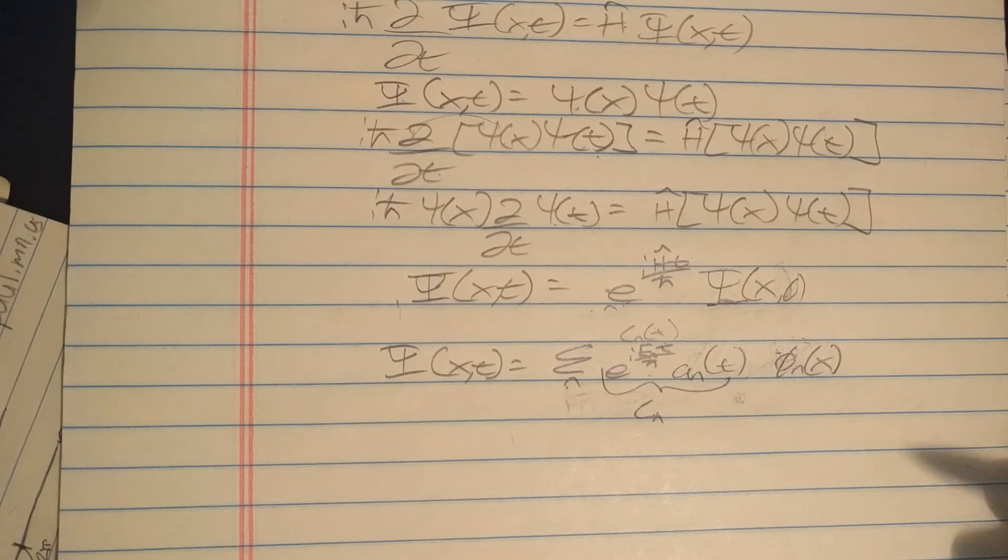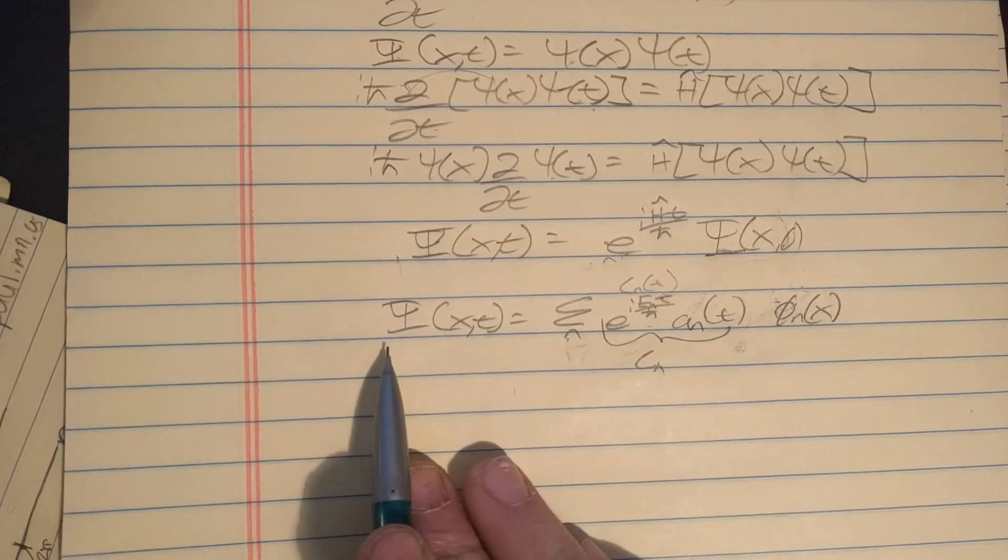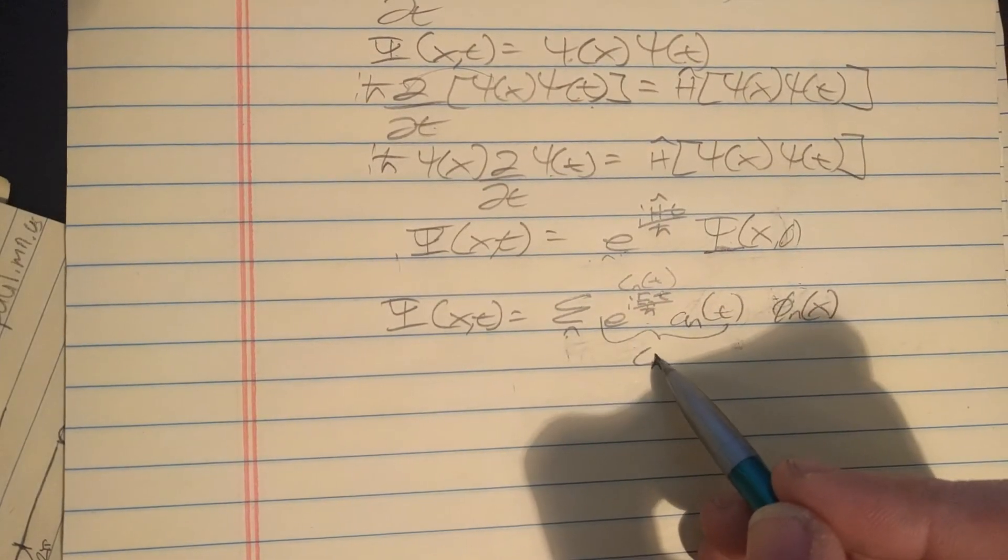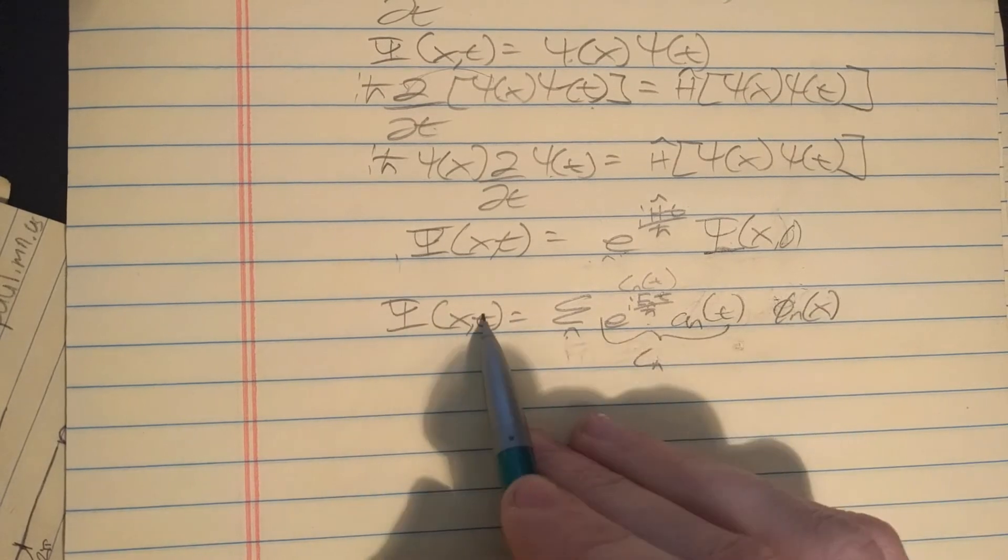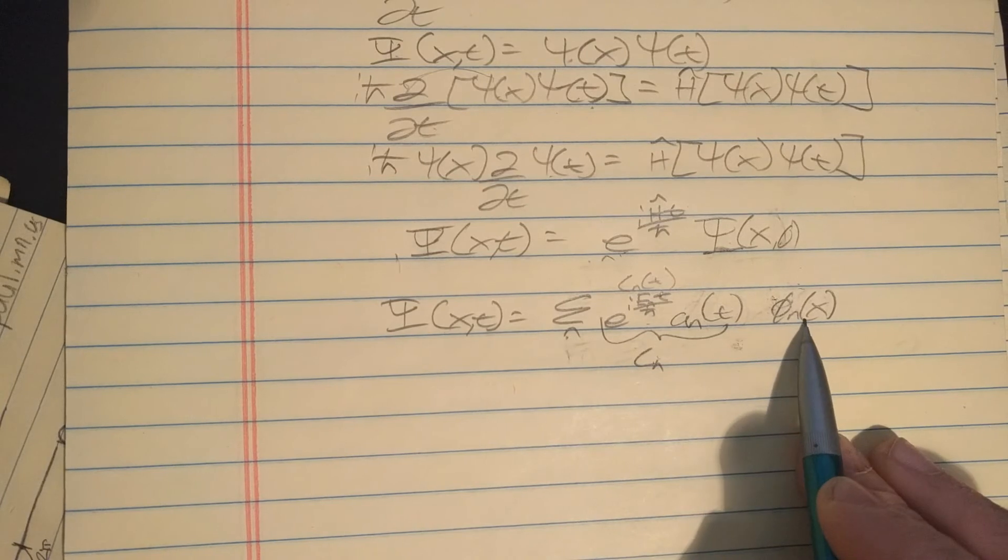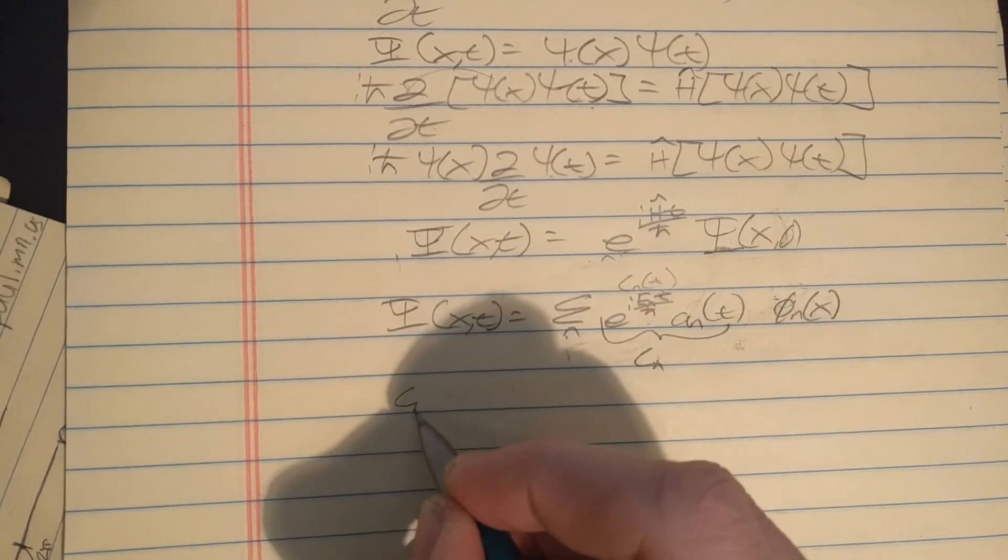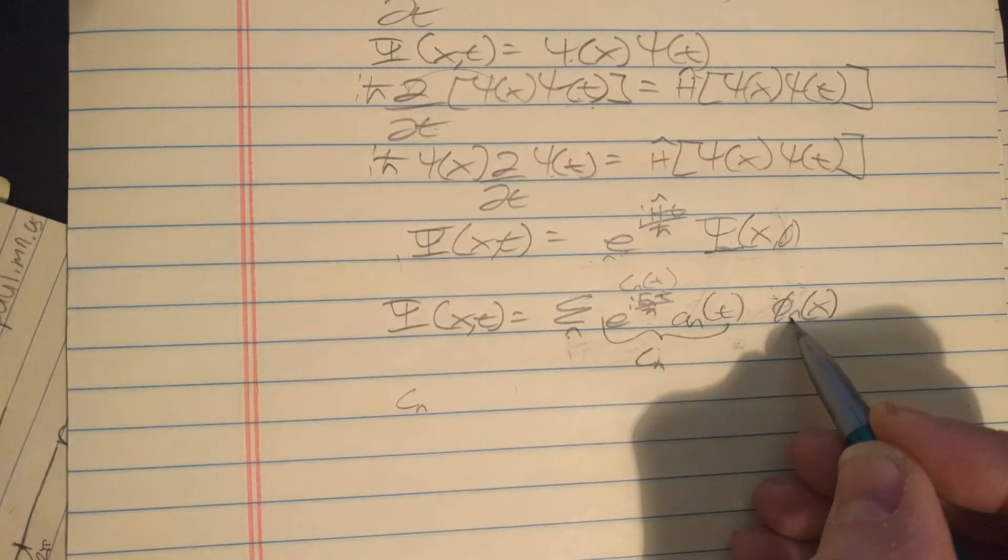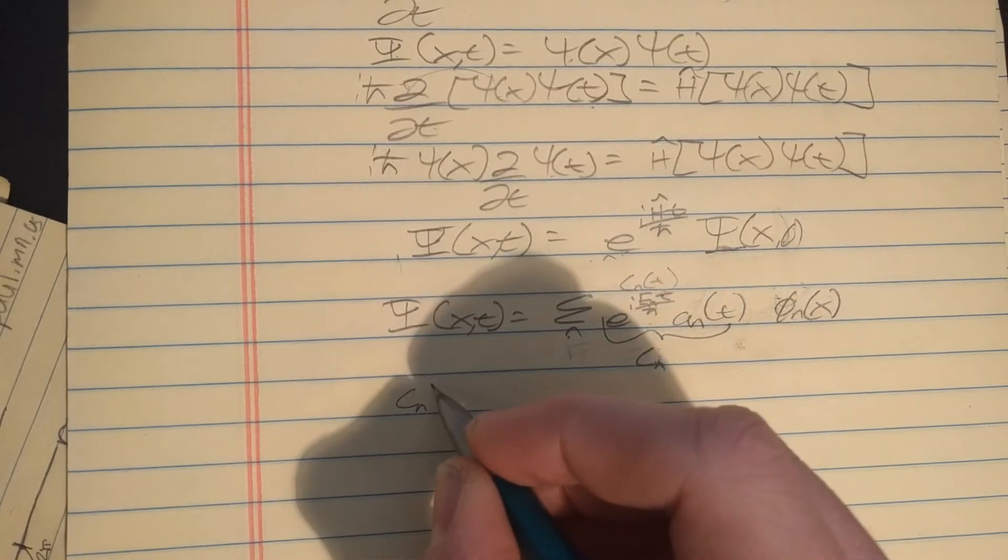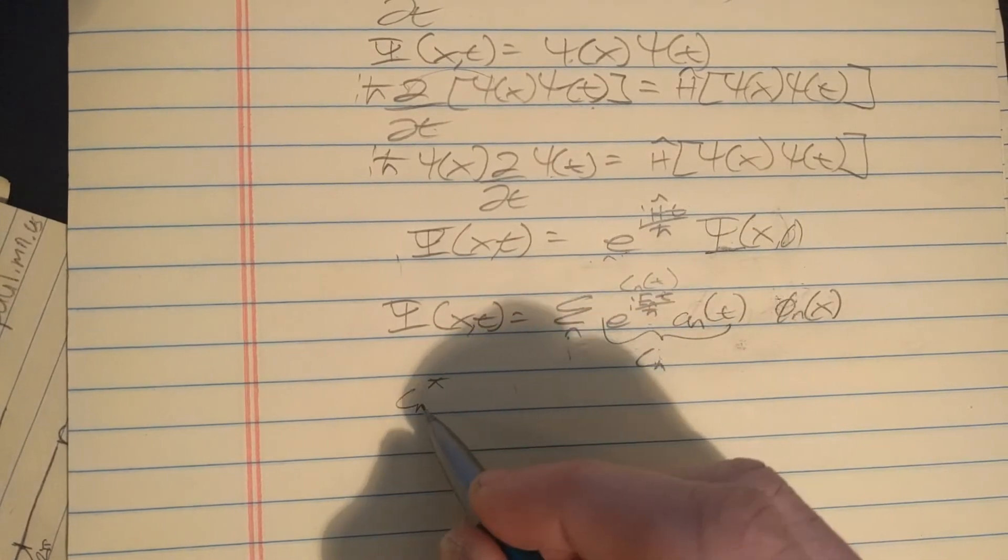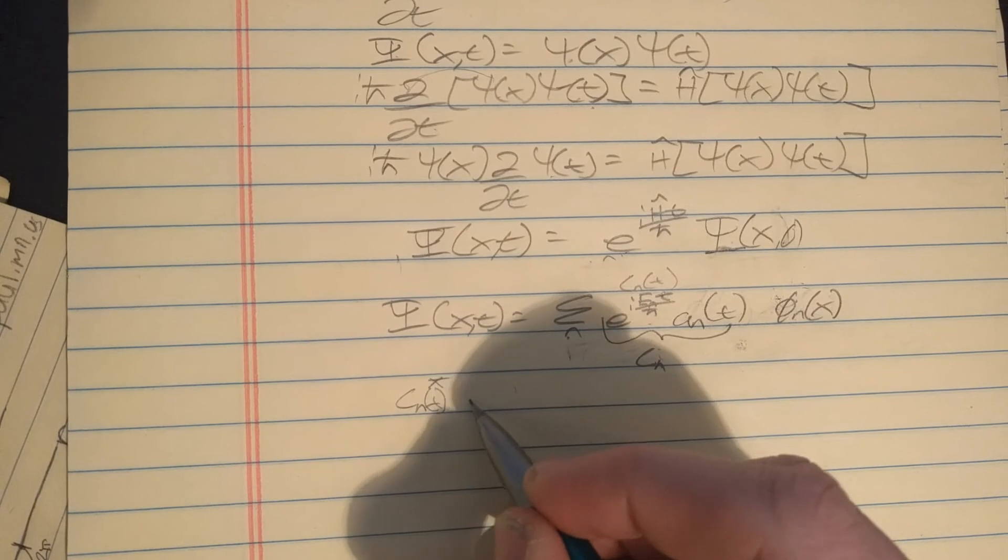That's working with the time dependent Schrödinger equation. Now, what does this state mean? Here's the physical meaning of it: since we can write this state as a linear combination of all these other stationary states, if we take the coefficients here on each state and we take their modulus - you take the complex conjugate of it, and it can depend on time...